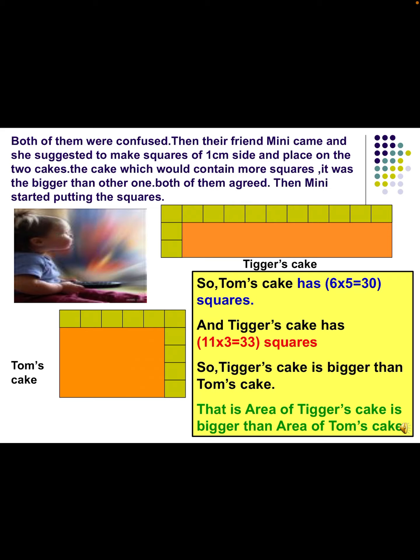Their friend Mini suggested making squares of 1 cm side and placing them on the two cakes — the cake containing more squares would be the bigger one. In Tom's cake: 6 × 5 = 30 squares. In Tigger's cake: 11 × 3 = 33 squares. So Tigger's cake is bigger. By counting the number of squares you can find the area of a 2-dimensional object using length and breadth.